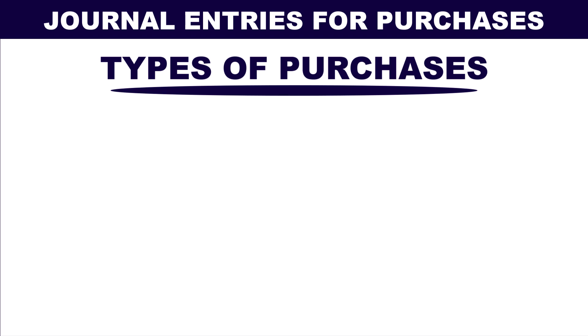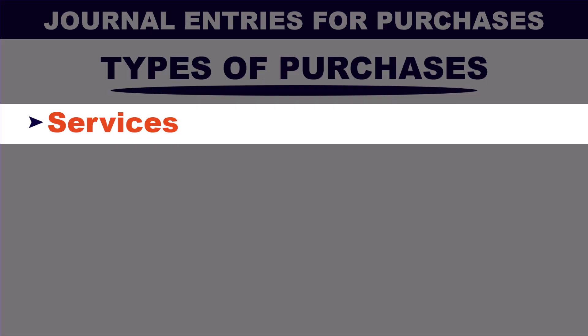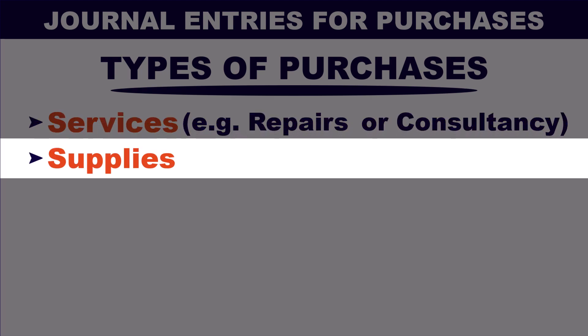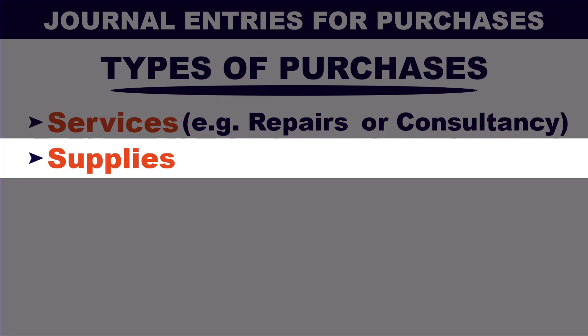What is meant by types here? That means is the item purchased just a service — for example, repair of a printer or consultancy services and so on. Or if the item purchased is a physical product, is it supplies? Supplies are small items consumed in daily operations and last for a short period of time, usually for less than a year.